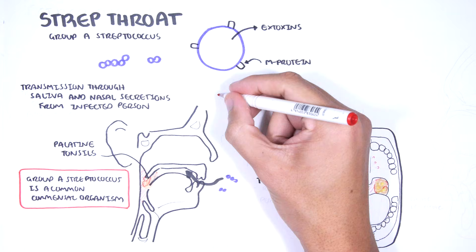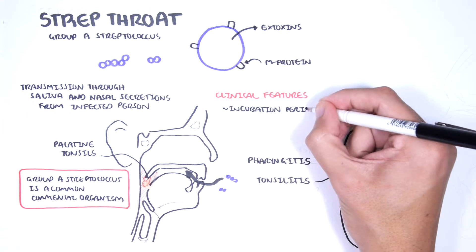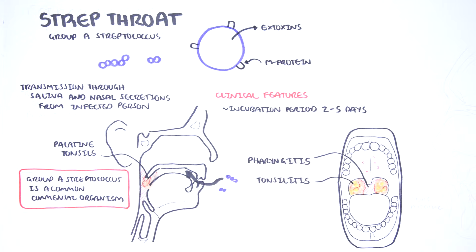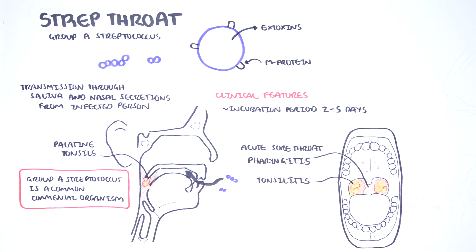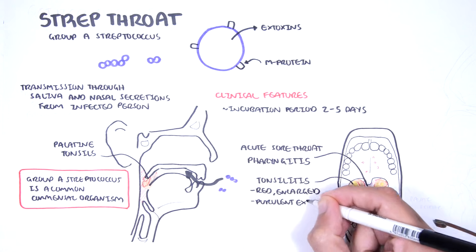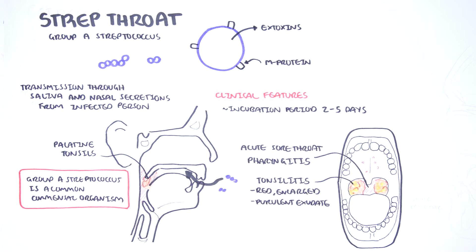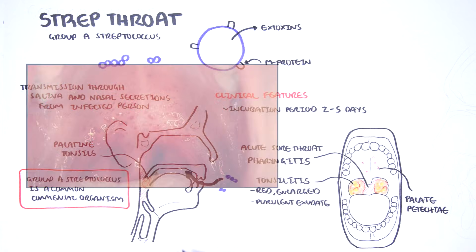Clinical Features: The incubation period of strep throat is usually 2-5 days of no symptoms. When symptoms do arise, bacterial tonsillitis causes sudden onset fevers, sore throat, pharyngitis and tonsillitis which are red, enlarged, and have purulent exudate. On the soft palate, you can also potentially see palatal petechiae. Here is a photo of strep throat. Note the enlarged tonsils and exudate in yellow.